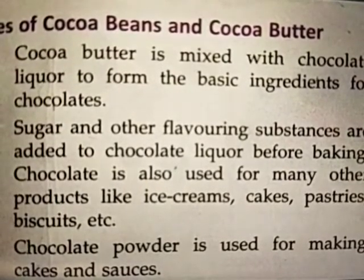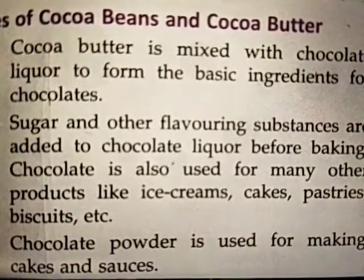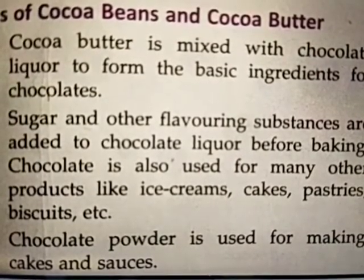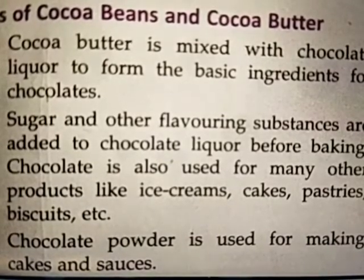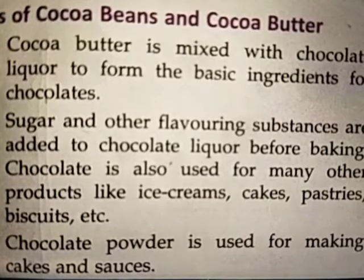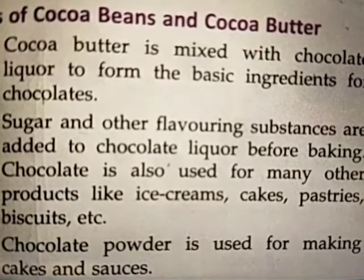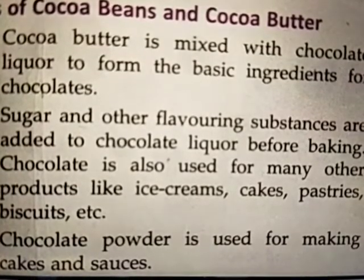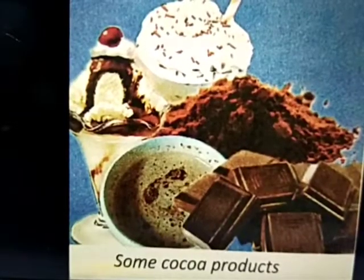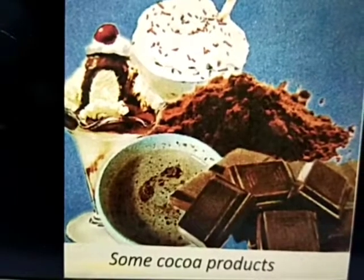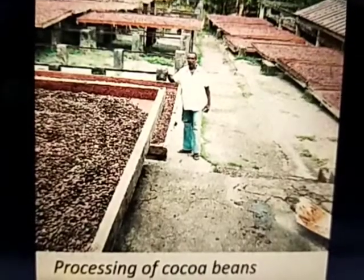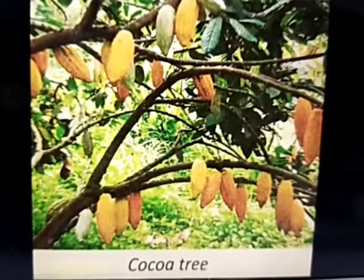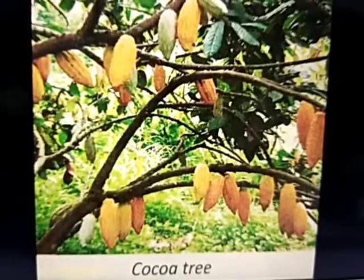Uses of cocoa beans and cocoa butter: cocoa butter is mixed with chocolate liqueur to form the basic ingredients for chocolates. Sugar and other flavoring substances are added to chocolate liqueur before making chocolate. It is also used for many other products like ice creams, cakes, pastries, and biscuits. Chocolate powder is used for making cakes and sauces. Some cocoa products and images of the processing of cocoa beans and cocoa trees are shown.